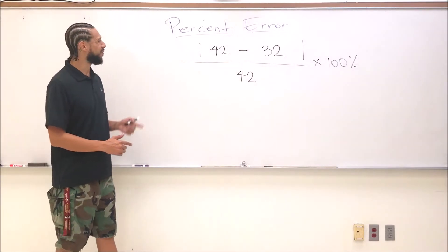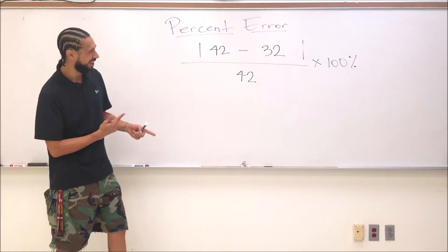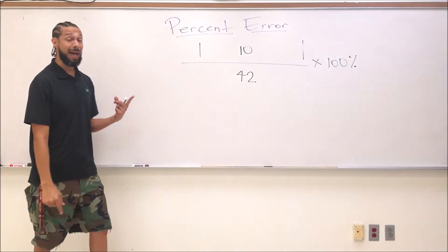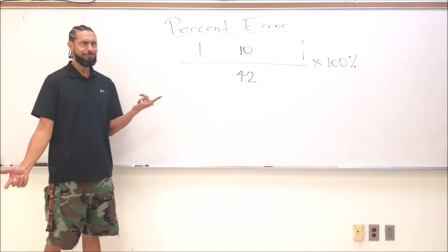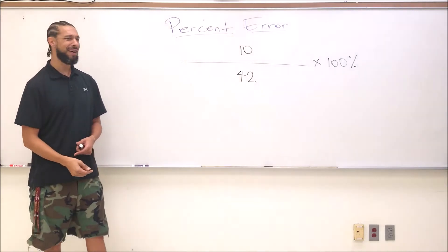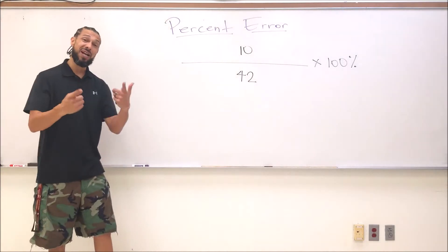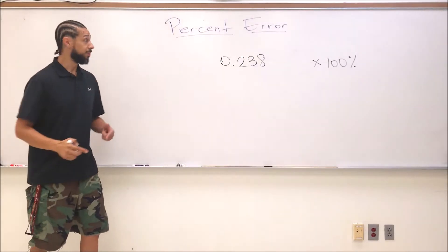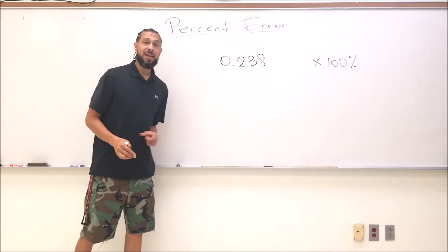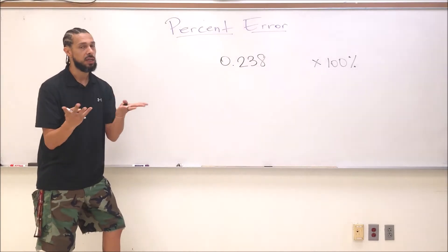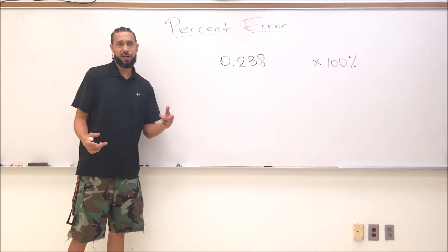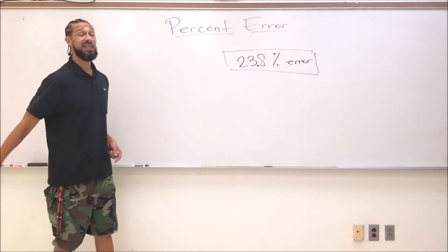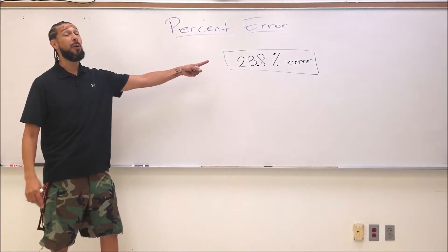Let's do a little math real quick. 42 minus 32 is 10. The absolute value of 10 is 10. 10 divided by 42. Let's go ahead and change that into a decimal now, three significant digits: 0.238.